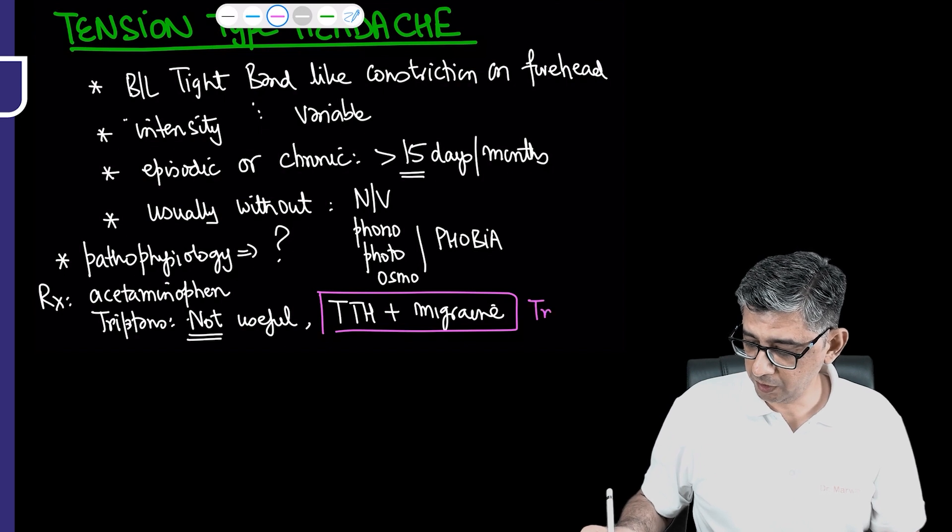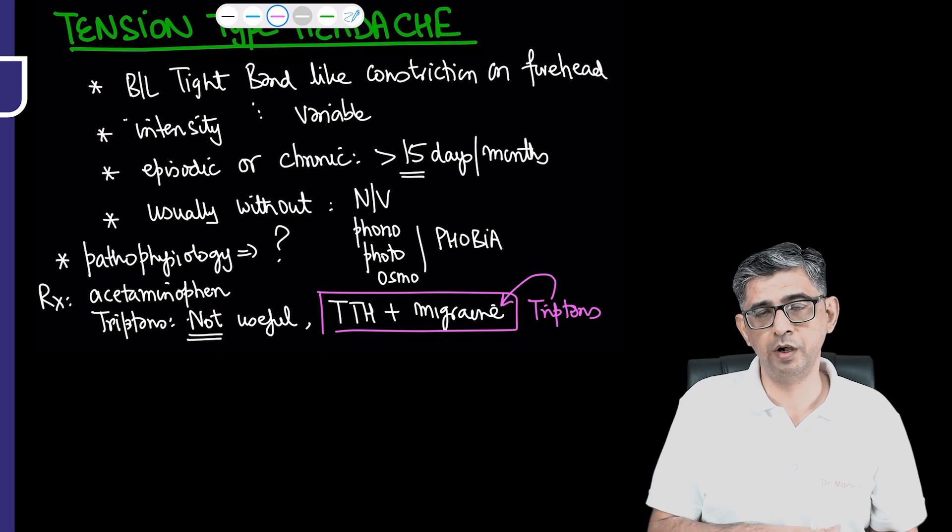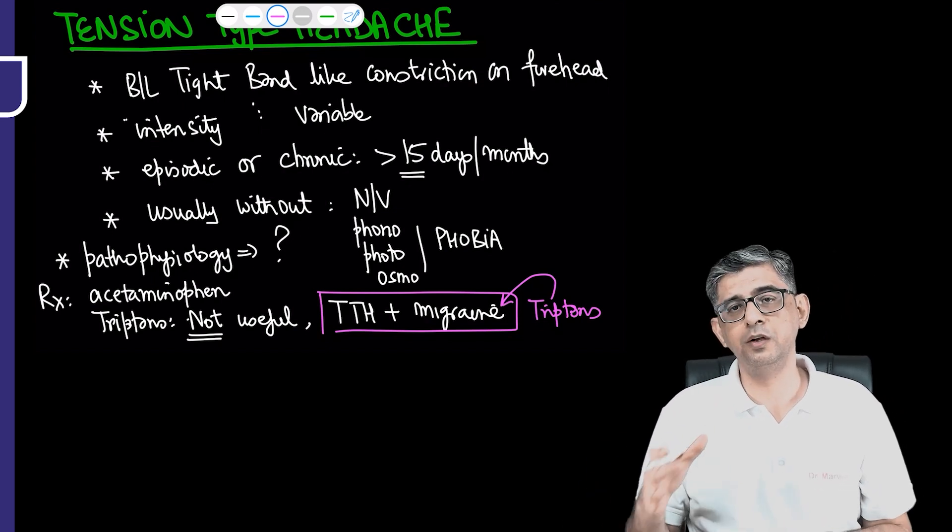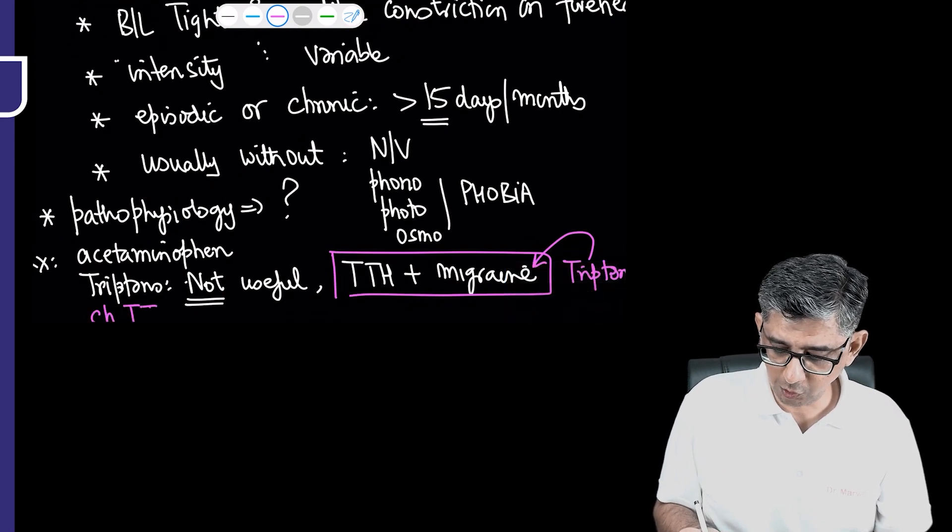So combination of the two is also possible. If the combination exists, then tryptans will be working. Where are tryptans useful in a patient of tension type headache? Not in a case of plain tension type headache - it is in combination of tension type headache with migraine that tryptans are found to be useful.